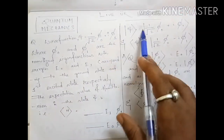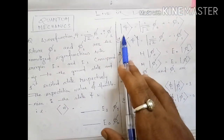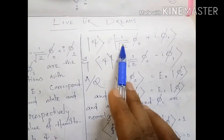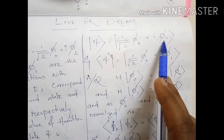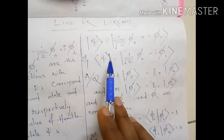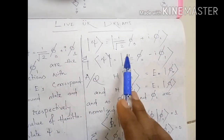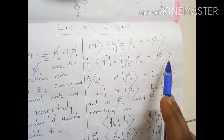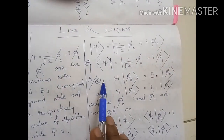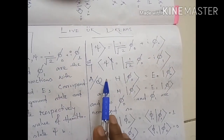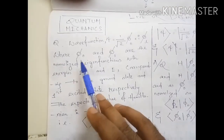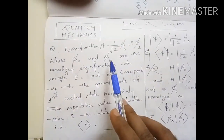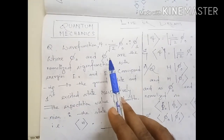Let's go to the solution. We have ψ equal to 1 by root 2 times (φ₀ + iφ₁). Its conjugate ψ* is 1 by root 2 times (φ₀ - iφ₁). According to the question, φ₀ and φ₁ are the eigenstates of the ground state and excited state.